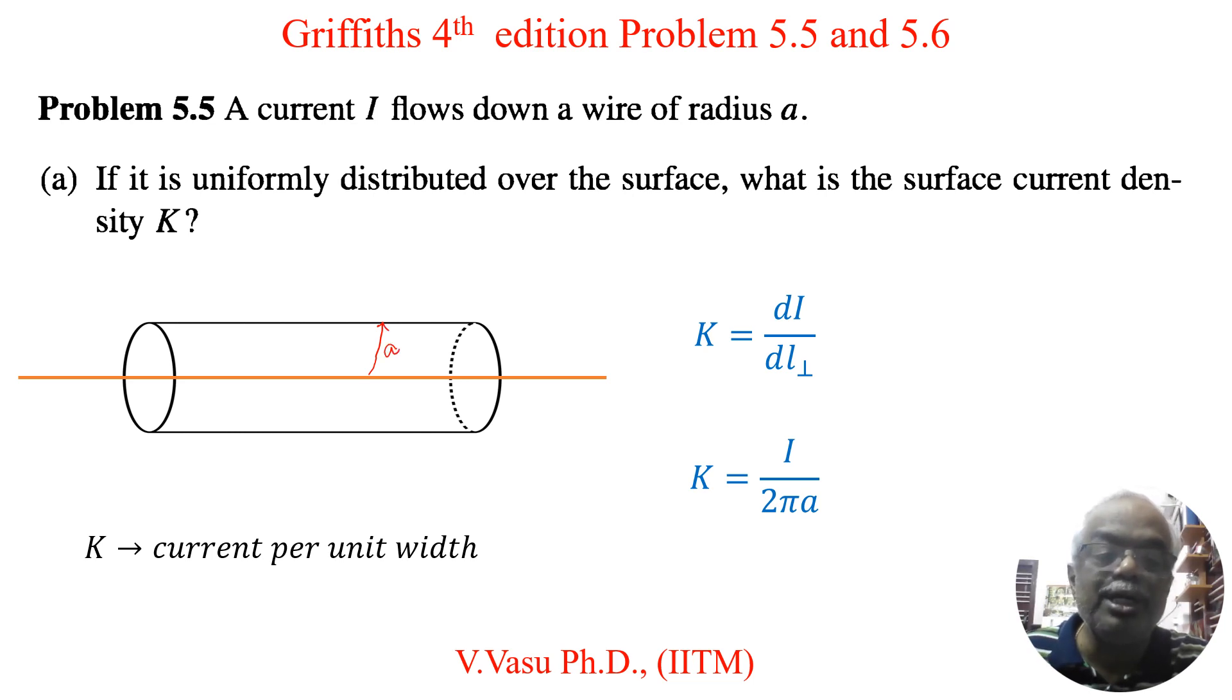So what is the current density, surface current density? That is more important. So by definition, surface current density, that is current per unit width, is defined as K equals dI over dl perpendicular, that is its perpendicular distance. So the perpendicular to the wire is this circumference circle.